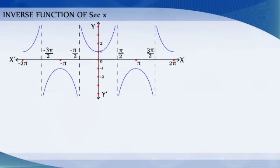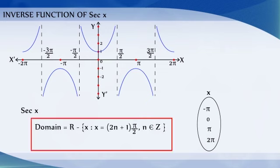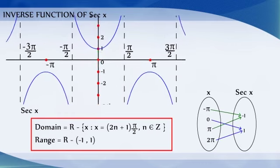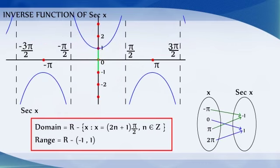Now, let us discuss the Secant Inverse X function. The domain of Secant X function is the set of all real numbers except the odd multiples of pi by 2, and its range is the set of all real numbers except the numbers in the open interval (-1, 1).